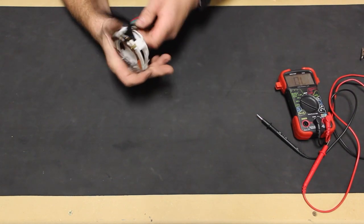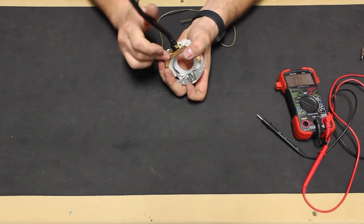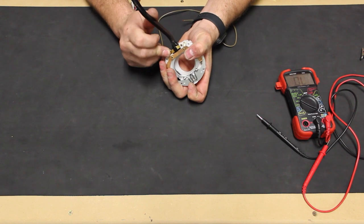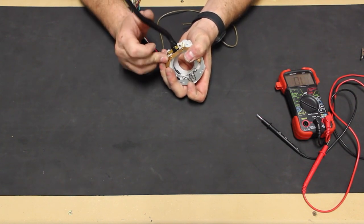The turn signal switch is also part of the wiring for the horn through the contact here on the face. It also operates the headlight relay, toggling back and forth between the low beams and the high beams when you pull back on the lever.